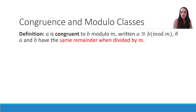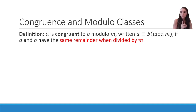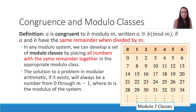The result is actually the remainder when you divide by 7. To expand on that, let's talk about congruence and modulo classes. A is said to be congruent to B modulo M — written A ≡ B (mod M) using the three-line equal sign — if A and B have the same remainder when divided by M. In any modulo system, we develop a set of modulo classes by placing all numbers with the same remainder together. The solution will always be a number from 0 through M minus 1.